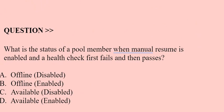Next question: What is the status of a pool member when manual resume is enabled and a health check first fails and then passes? Option A: Offline, Disabled. Option B: Offline, Enabled. Option C: Available, Disabled. Option D: Available, Enabled.